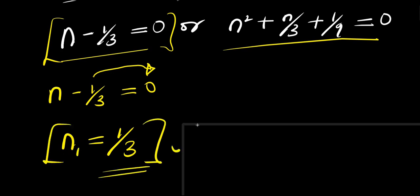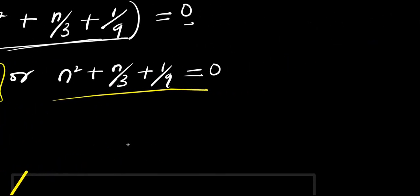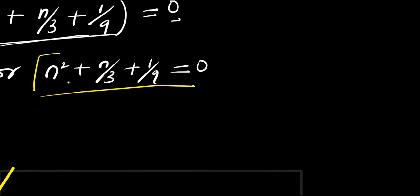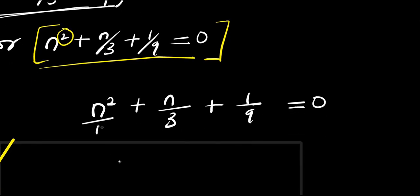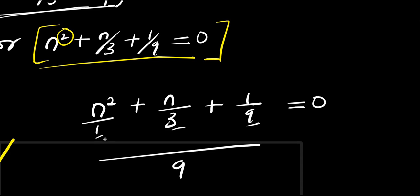The second solution will be to solve the quadratic equation: n squared plus n over 3 plus 1 over 9 equals 0. This is quadratic because the power of n is 2. We find the common LCM of 1, 3, and 9, which is 9.